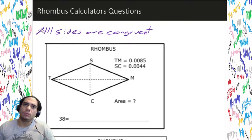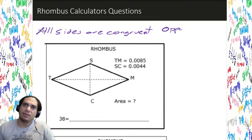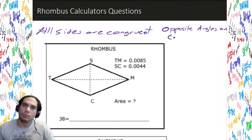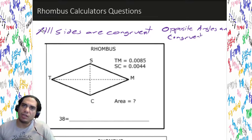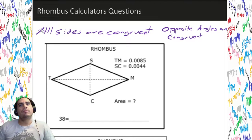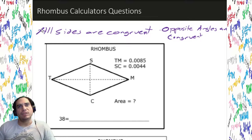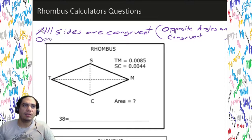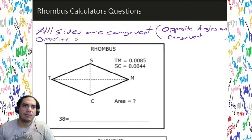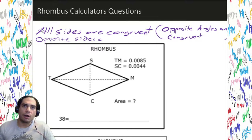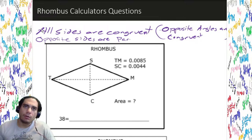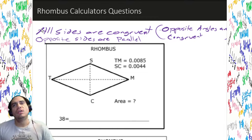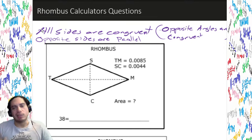All sides are congruent. Opposite angles are congruent — that's why it's kind of interesting. Opposite angles are congruent, all sides are congruent — these are major things. And of course, opposite sides are parallel. So these are some of the things we've got to know about a rhombus, what makes a rhombus. These three things right here — let's get it started.